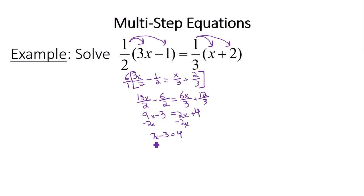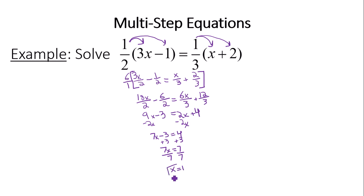We need to get the variable term by itself. Since we have minus 3, we add 3 to both sides — what you do to one side you do to the other — giving 7x equals 7. To get x by itself we divide both sides by 7, and we get x equals 1. The solution to this equation is 1.